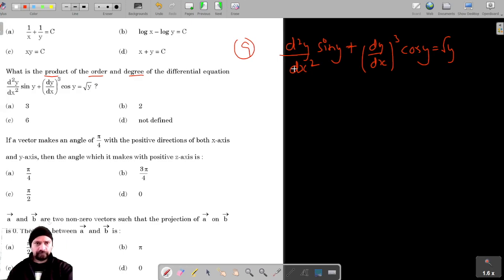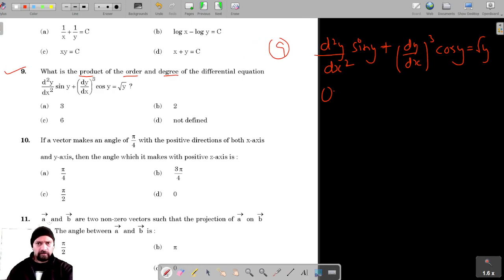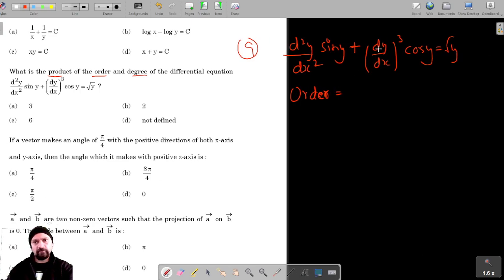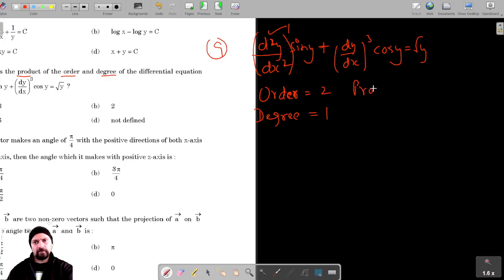The order is the maximum number of times this differential equation has been differentiated, which is 2. The degree is the power of the highest order derivative. The highest order derivative is d²y/dx² and its power is 1, so the degree is 1. We have to find the product of order and degree.